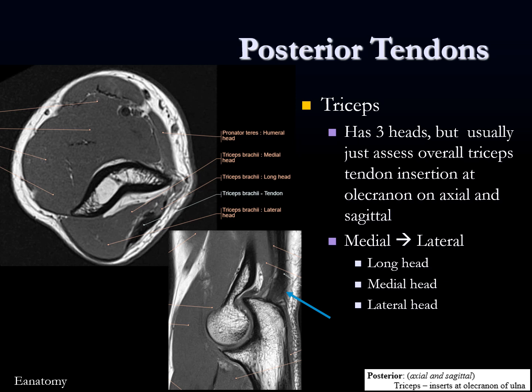Posterior tendons are the triceps — fairly straightforward. They have three heads, but usually we just make an overall assessment of the triceps insertion unless there's abnormality. I evaluate the triceps tendons on axial and especially the sagittal because the sagittal shows the insertion on the olecranon very well. As we go from medial to lateral there are three heads: the long head, the medial head, and the lateral head.